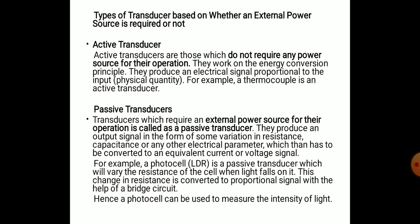Passive transducers require an external power source for their operation. They produce an output signal in the form of some variation in resistance, capacitance, or any other electric parameter, which then has to be converted to an equivalent current or voltage signal. For example, a photocell or LDR is a passive transducer because it varies the resistance of the cell when light falls on it, and this change in resistance is converted proportionally with the help of a bridge circuit requiring external power.